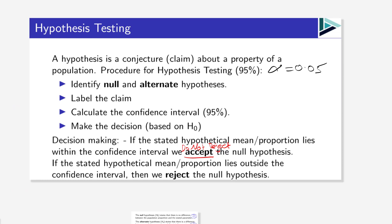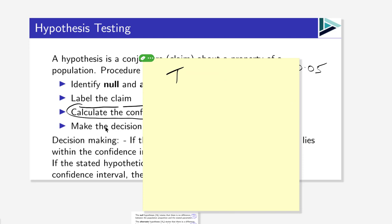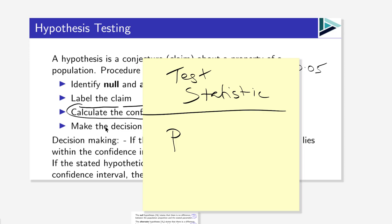That is our hypothesis testing. You would have noticed that we used the confidence interval for all of our hypothesis tests, which is a perfectly acceptable method. There are other methods for hypothesis testing where you use what's called the test statistic and the p-value. I will go through those in the next video, but it's important to understand these are just different ways of doing the exact same thing.